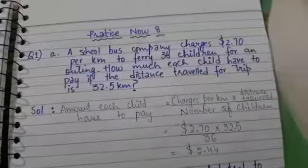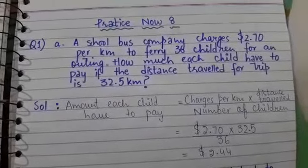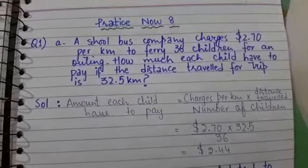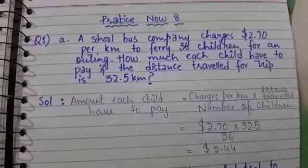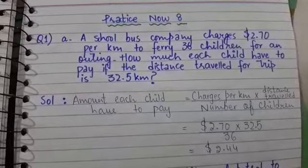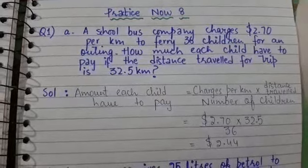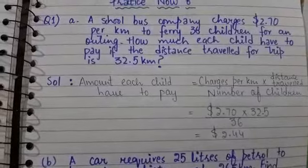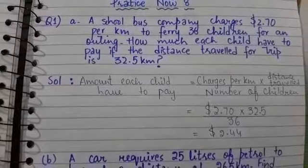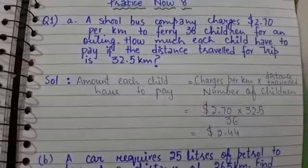Now moving towards our next practice. Practice Now 8: A school bus company charges $2.70 per kilometer to ferry 36 children for an outing. How much did each child have to pay if the distance traveled for the trip is 32.5 kilometers? For this word problem, we will use a formula which you can see in the video. Amount each child has to pay equals charges per kilometer multiplied by distance traveled divided by the number of children.